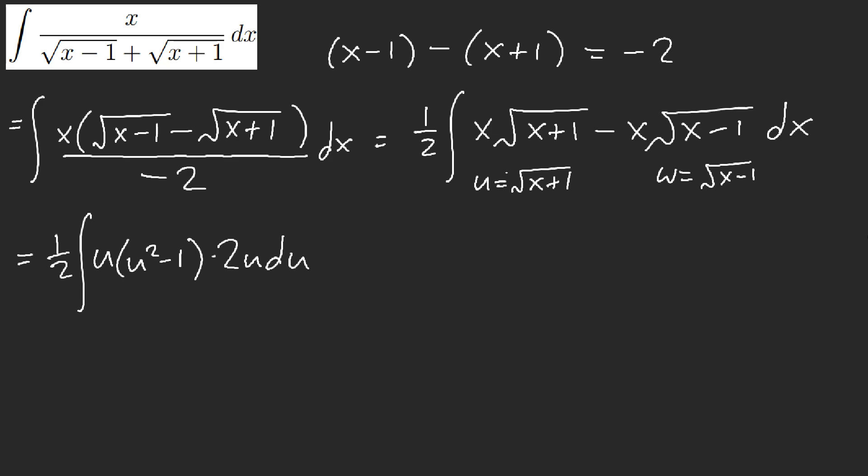Because u squared, and then derive both sides, u squared equal x plus 1. You get 2u du equal dx. So that's where that 2u du comes from. Okay? Same, similar process here. All right, we have w.